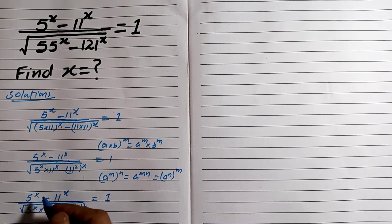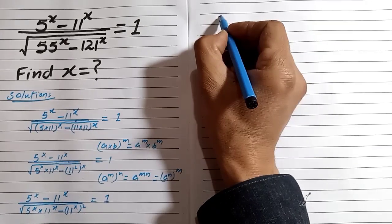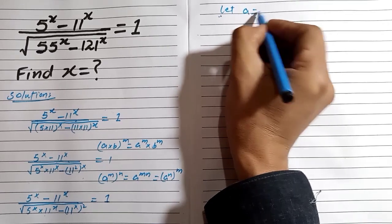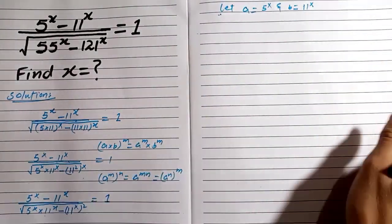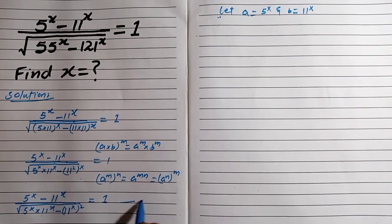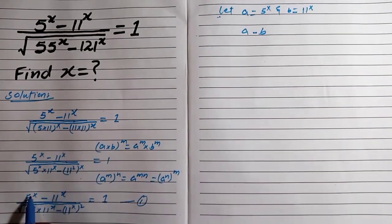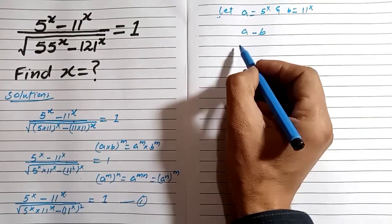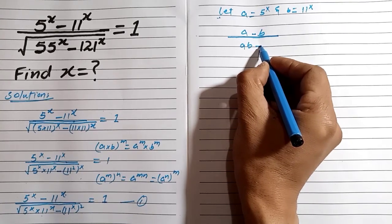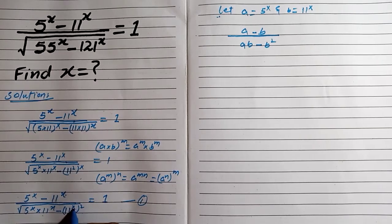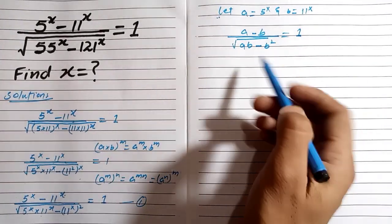Our numerator is the same form as our denominator, so we let a = 5^x and b = 11^x. Using this substitution, in this equation we have (a minus b) — where 5^x equals a and 11^x equals b — divided by a·b, giving a·b minus b squared under the root, equal to 1.